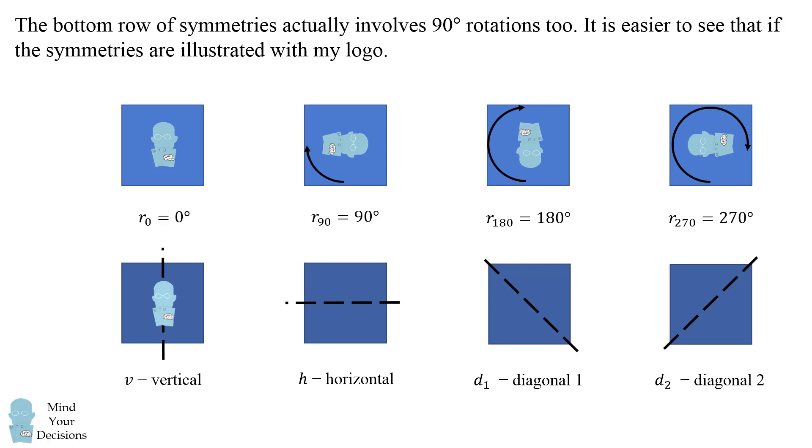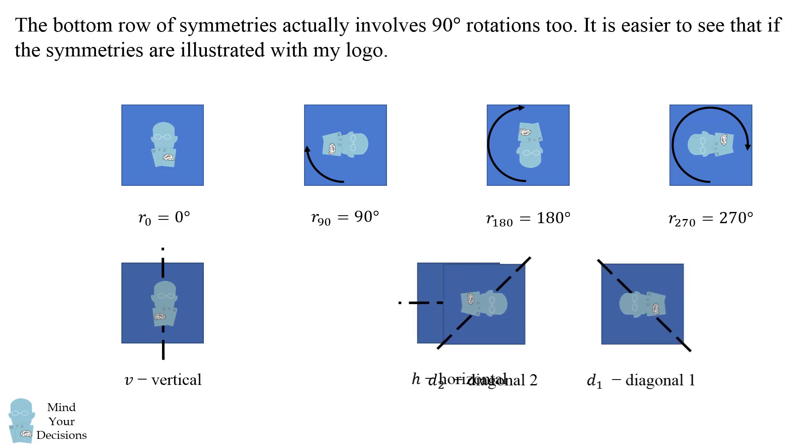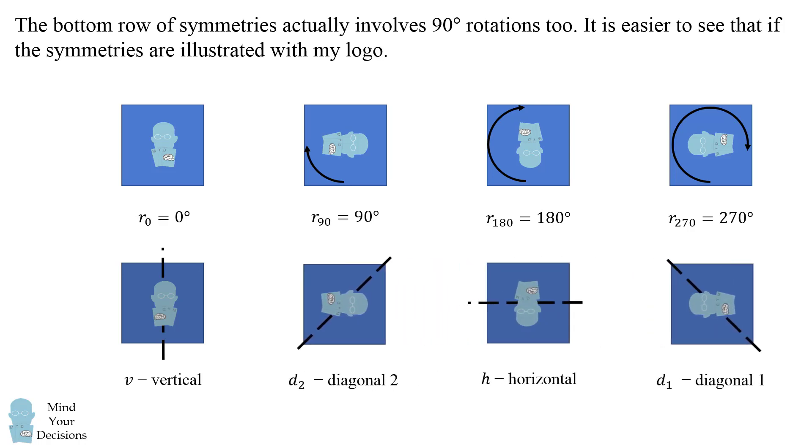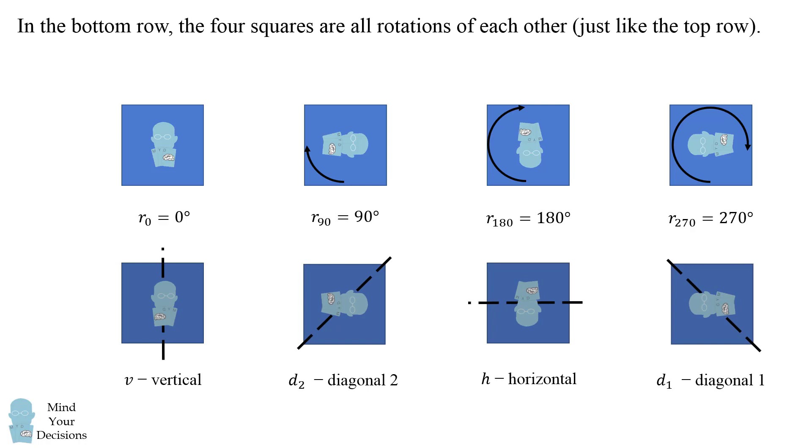Now let's go to the bottom row and do the same reflections to my logo. What do we end up with? Well, if you take a look at these diagrams, you'll notice that there are actually hidden rotations in them. In particular, if we rearrange the diagrams as follows, you'll see that the bottom row, the four squares, are all rotations of each other just like in the top row.